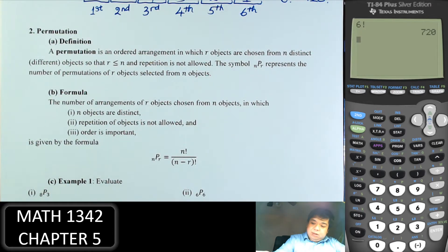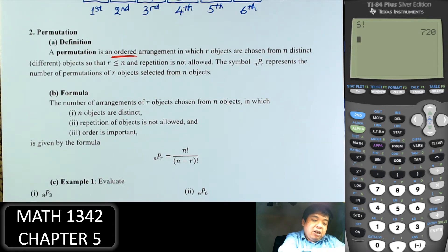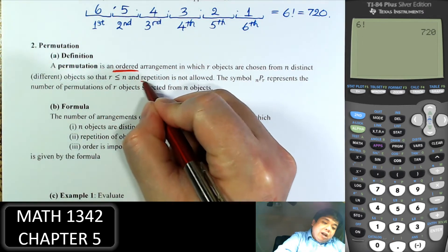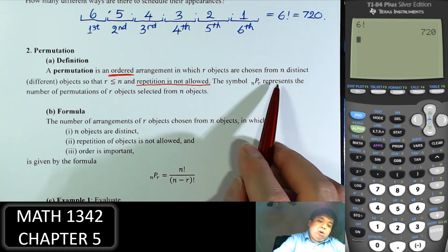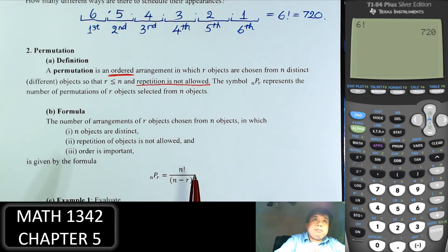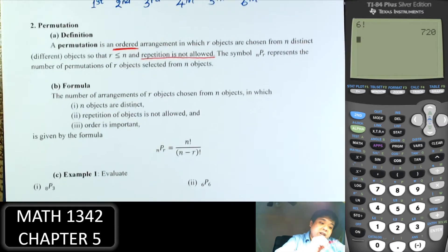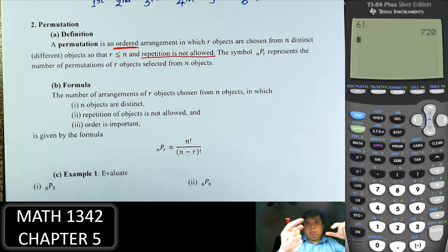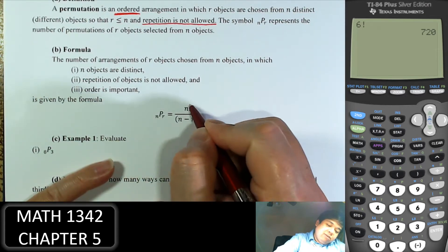In permutation, the most important point is that it is an ordered arrangement where r objects are chosen from n distinct objects — like choosing 3 to perform out of 6. Repetition is not allowed, so each one can only perform one act. The symbol nPr represents the number of permutations. The formula is n factorial over (n minus r) factorial. Objects are distinct, repetition not allowed, and order is important.